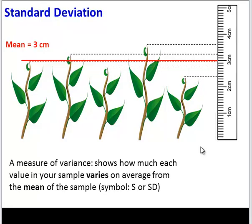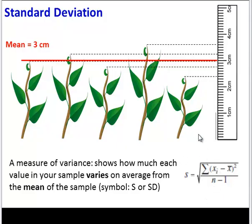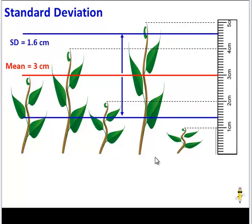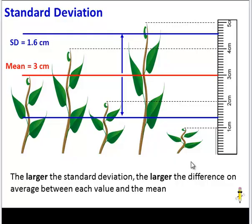Standard deviation is a measure of variance. It shows how much each value — each individual plant — varies on average from the average value for your population. We would calculate standard deviation using this formula, and we'll practice that later. In this case, the standard deviation is 0.4 centimeters, meaning each plant on average is about 0.4 centimeters greater or less than the mean of 3 centimeters. Comparing that to the first population, the standard deviation there is 1.6, so each plant is much further from the mean. In general, the larger the standard deviation, the larger the difference on average between each individual value and the mean of the population.